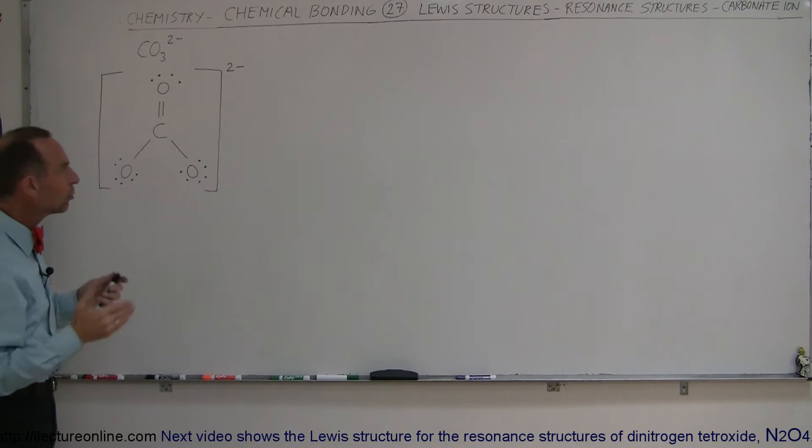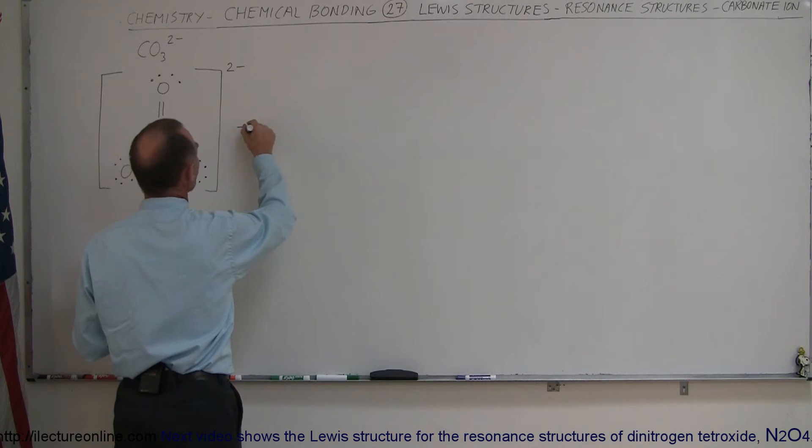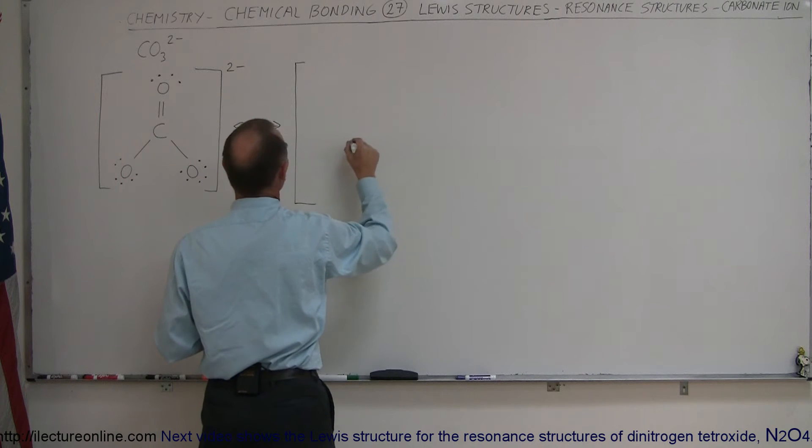So to properly draw the Lewis structure for that, we have to draw all the various components of the resonance. Since there's three different possibilities, we have to draw those three different possibilities with a double arrow in between.